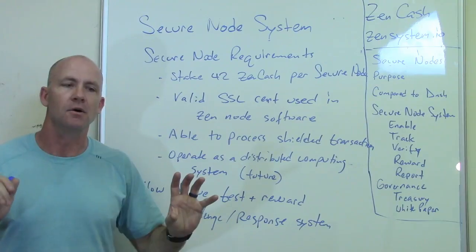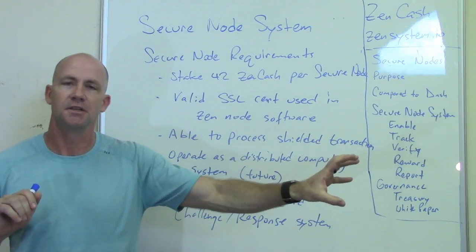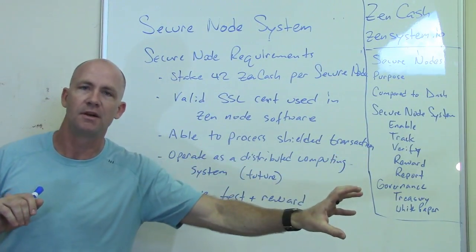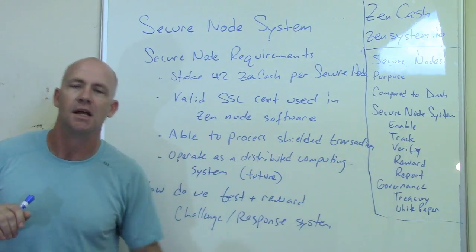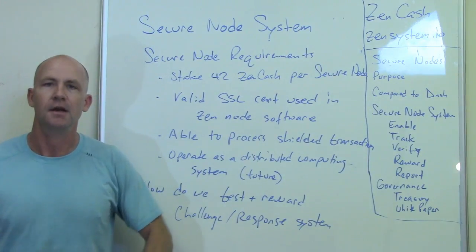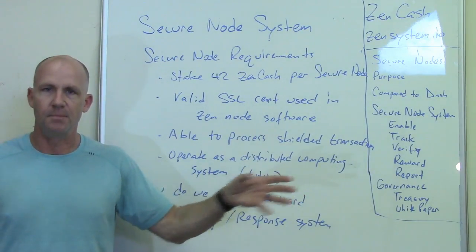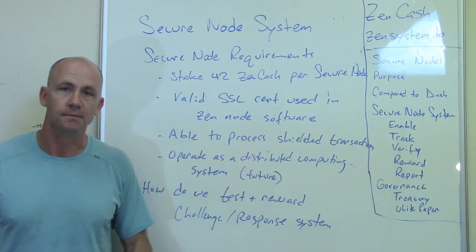They're not able to say, 'I see some shielded transactions happening over here in this cluster of IP addresses — let's go check out what's going on.' Instead, there's a base level of shielded transactions happening worldwide.